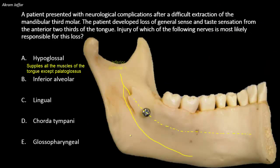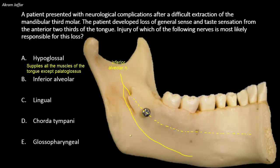Returning to the inferior alveolar nerve within the mandibular canal — at this point it is close to the root of the third molar, and hence it might be injured during removal of an impacted third molar. However, the hypoglossal nerve is wrong because it provides motor innervation to the tongue, not sensation. The inferior alveolar nerve does not supply the tongue — it supplies the teeth. Yes, it might be injured in cases of an impacted third molar, but the neurological consequences differ from what has been described in this case.